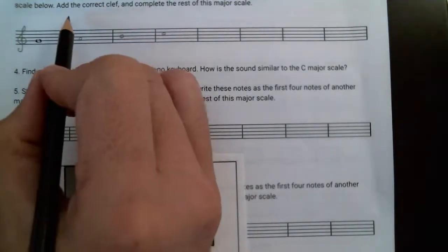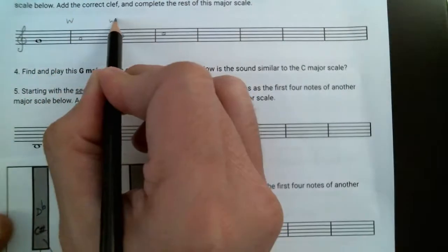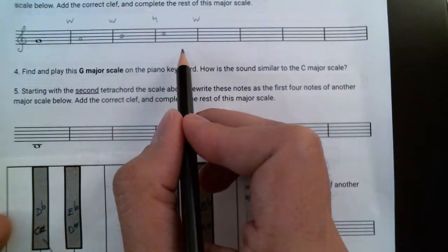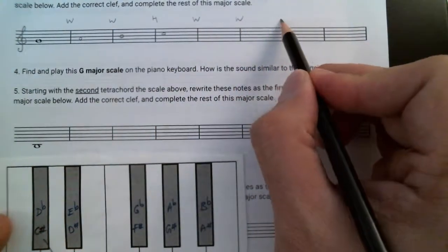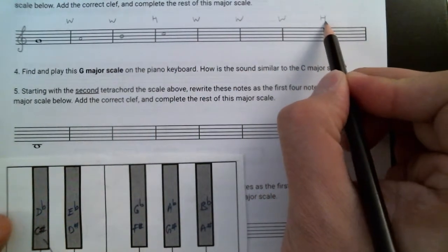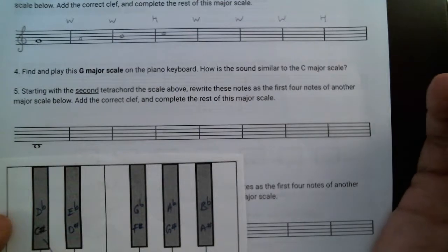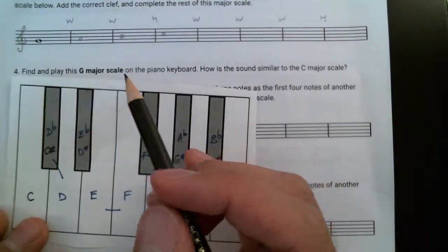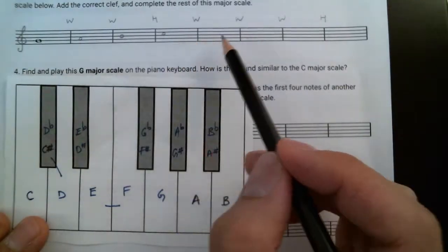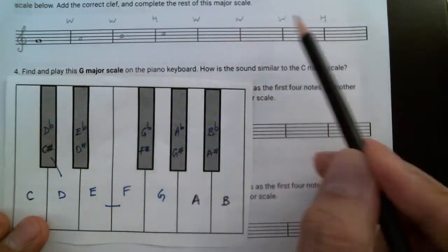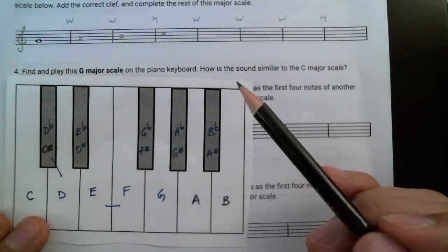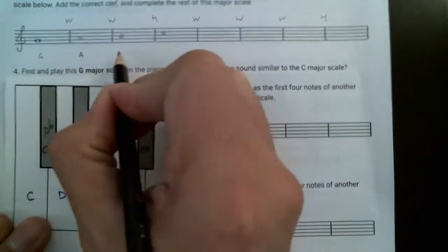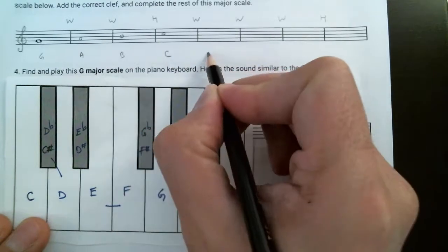Okay, now again, if you want to remind yourself, this is the pattern: whole, whole, half, connect it to the second tetrachord with another whole step, and then whole, whole, half. The next thing I need to do is complete the rest of the scale, and that comes with trying to determine what the notes are that are going to be here. As we've done before, the first thing to do is just to write down all the note names in letter.